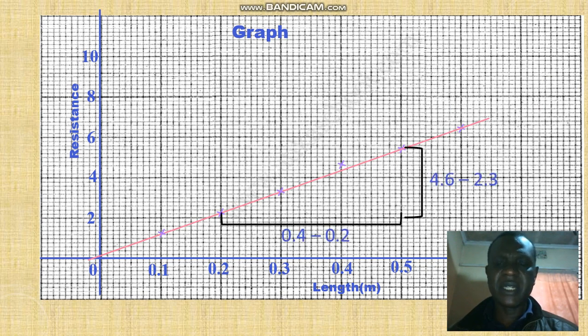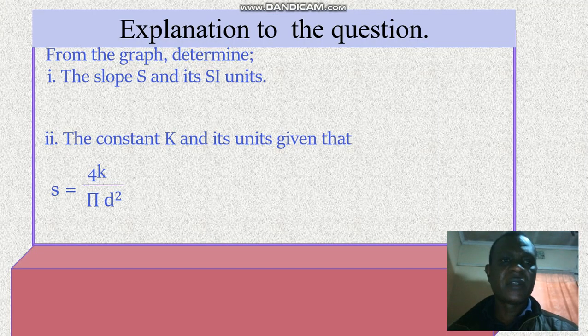Then we calculate the slope of the graph, change in y over change in x. So the slope is 10.5. So therefore, from the graph, determine the slope S of the graph and its SI units. We have 10.5.